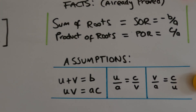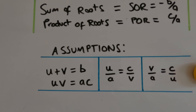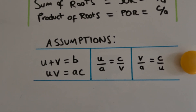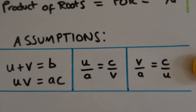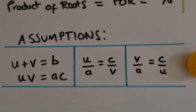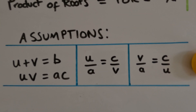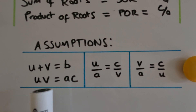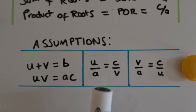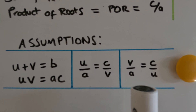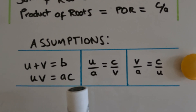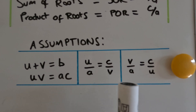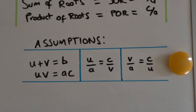Some assumptions — what we've already outlined — I'll just write them in this blue box. So u plus v equals b and uv equals ac. If we rearrange that, we also have u over a equals c over v — you get that from the second equation, just rearrange it. Likewise, v over a is equal to c over u. These two equations will become useful later on in the proof.